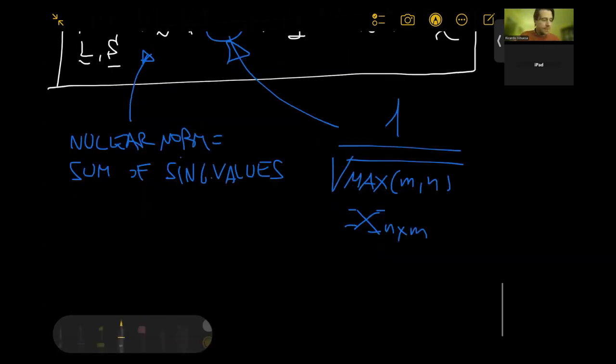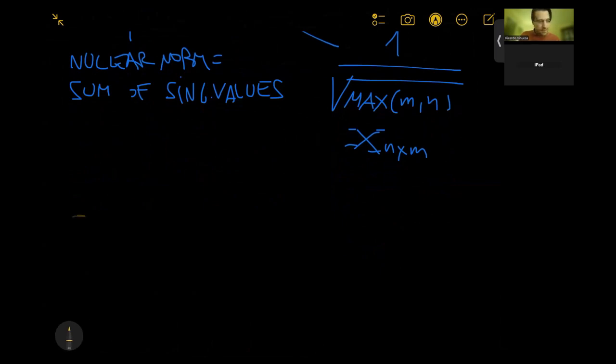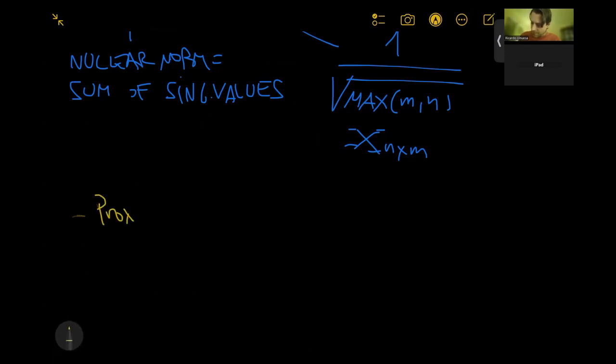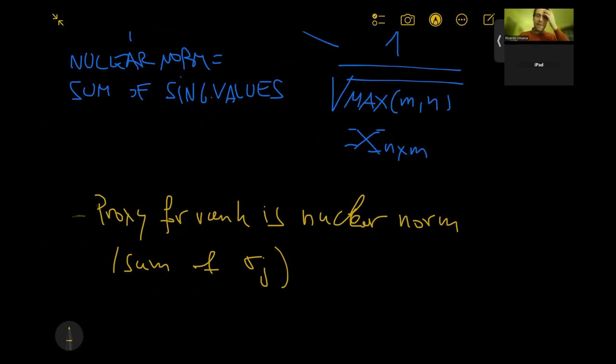Two important notes. The first one is that the proxy for rank, let's put it like this, the proxy for the rank is the nuclear norm. Nuclear norm, which is the sum of singular values. And this kind of makes sense. I mean, it's not exactly the rank, but it's connected. It's going to give you a good indication of the rank, the sum of the singular values. And it's much easier to compute and much easier to optimize when you're aiming at minimizing the sum of the singular values than just minimizing the rank. So this is a pretty good proxy, the nuclear norm, for the condition of minimizing the rank of the matrix.